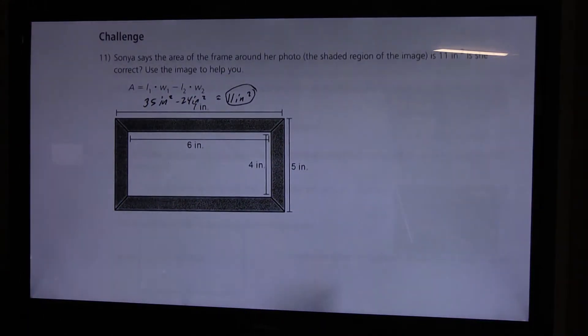So my answer would be yes, Sonia is correct that the gray shaded region of the image, that the frame around her photo is 11 inches square. And I used what I know about finding the area of composite figures. And that's pretty much just kind of a composite figure. And by doing that I was able to figure out that 11 inches square is the area of the frame around her photo.